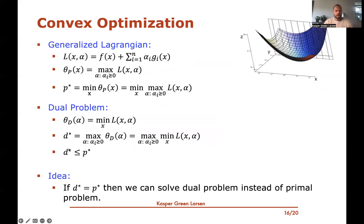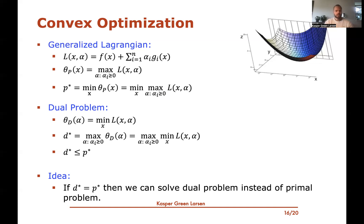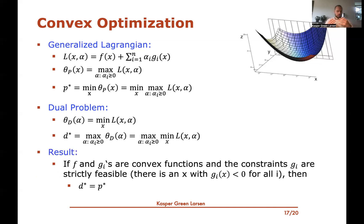So the dual value is always less than or equal to the primal value. The key insight is: if the dual value actually equals the primal value, we could solve the dual problem instead of the primal, since they have the same optimal value. This is what we'll end up doing, and for a lot of reasons it will be very useful. The question is: when does d* actually equal p*?